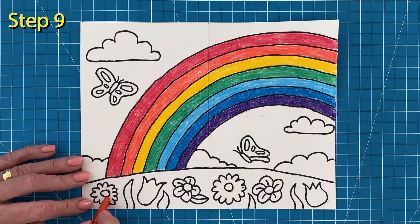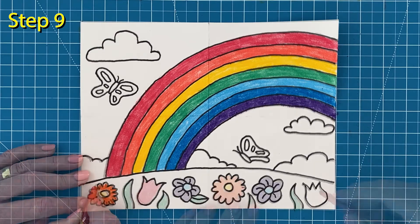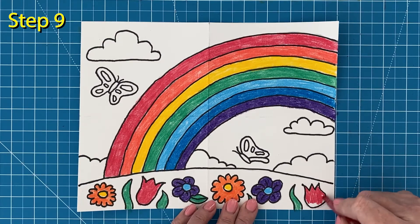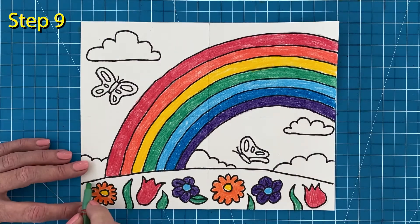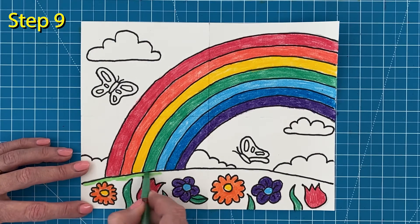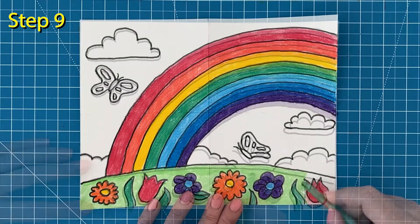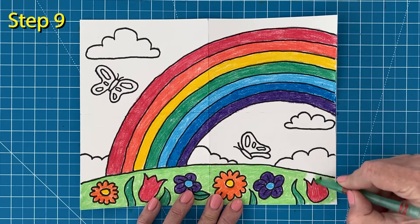Next, all those flowers can share some of those fun rainbow colors. Just be sure to save the light green for that background grass color. That light green color is bound to show off all those pretty flowers. Be sure to take your time going around all of those flower edges.